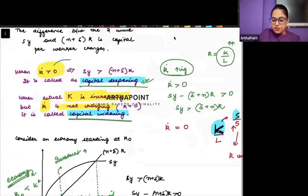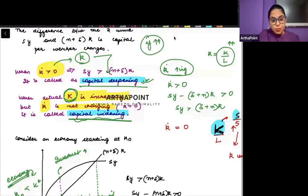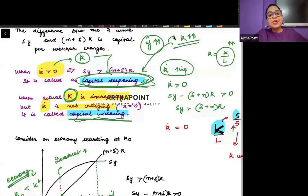Whenever small k changes, that is called capital deepening. When capital K changes, that is called capital widening. Capital widening does not lead to growth. Remember, for growth, small y must increase. Small y will increase when small k increases, which happens when there is a capital deepening process.